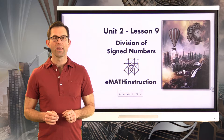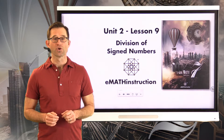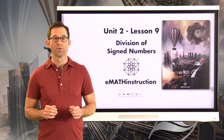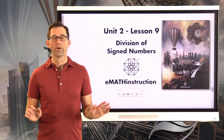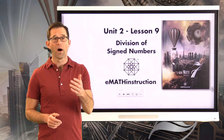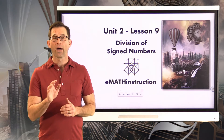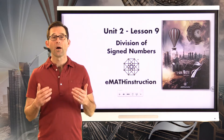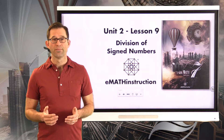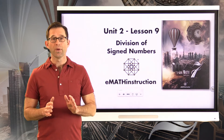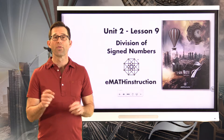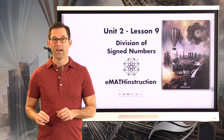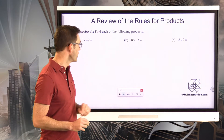Hello and welcome to another NGen Math 7 lesson by eMath Instruction. My name is Kirk Weiler and today we're going to be doing Unit 2 Lesson 9 on Division of Signed Numbers. It is extremely important before you learn how to divide numbers that are positive and negative that you know how to multiply them first, because everything we understand about division comes from understanding multiplication. Let's jump in and do some review exercises.